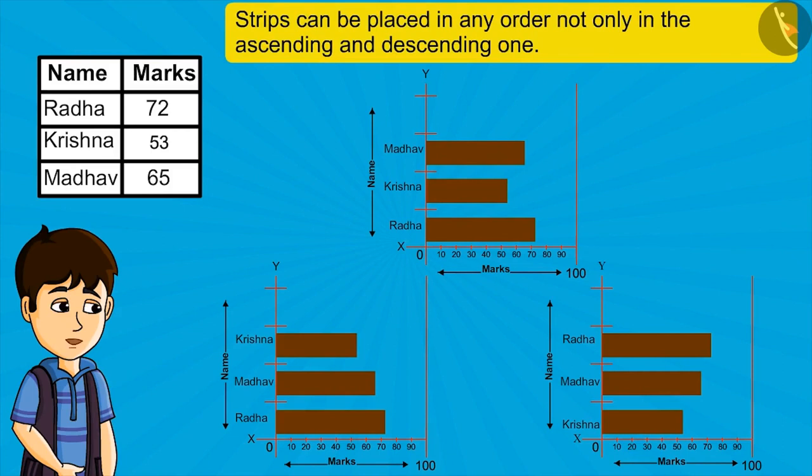You can rightly interpret data from these three charts. So, we can say strips can be placed in any order, not only in the ascending and descending one.